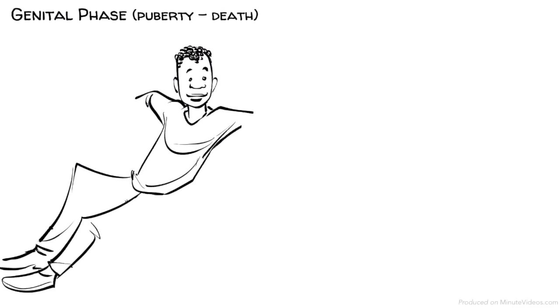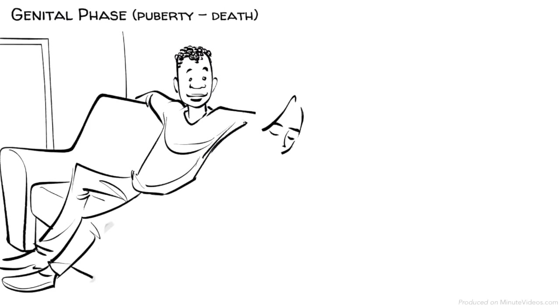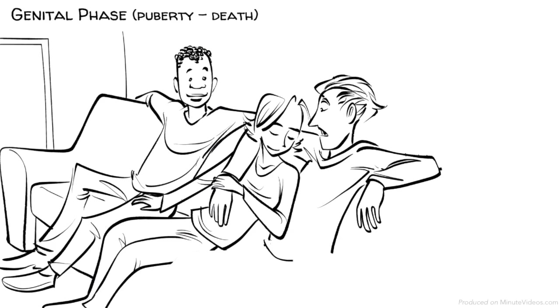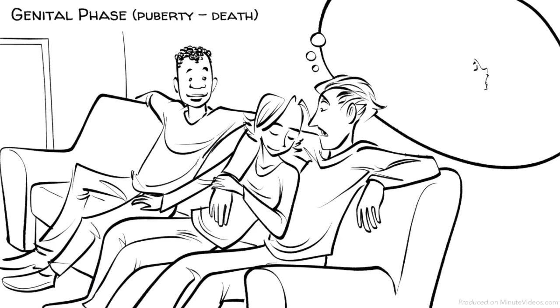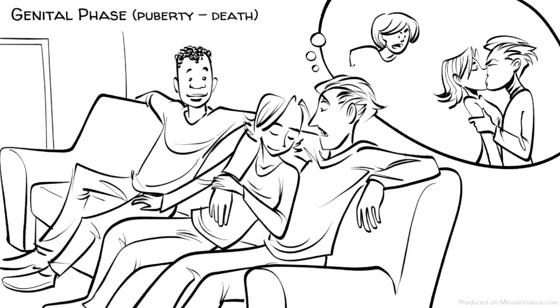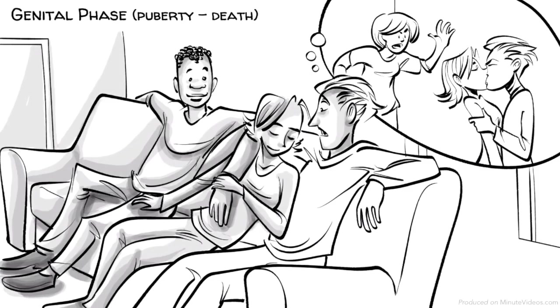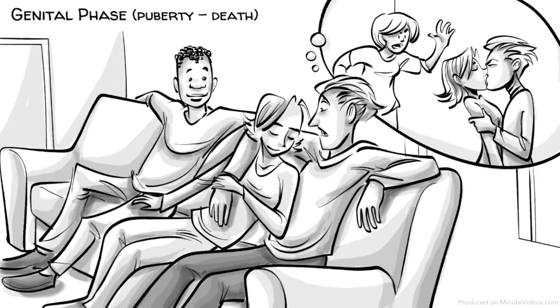The genital phase, puberty to death. Once we reach puberty, our libido starts to become active again and we develop an interest in sexual partners. Hans, Ida and Ernst face the challenge of balancing the sexual desires of the id and the needs of the super-ego to obey social norms. The development of a strong ego helps to find a compromise between the two.